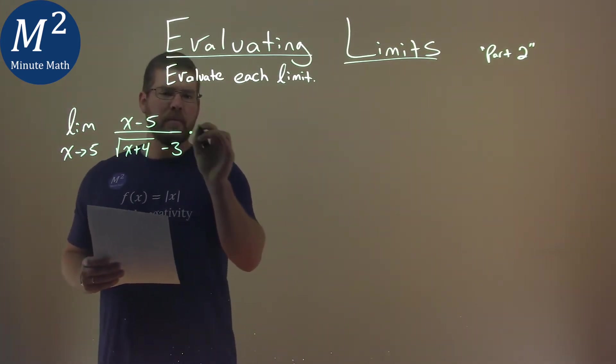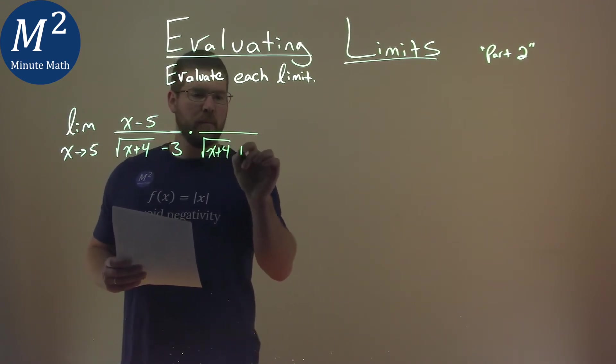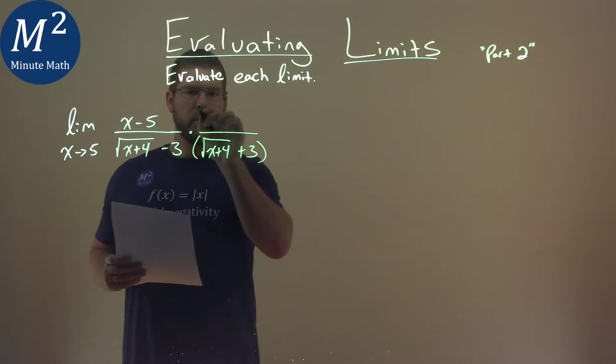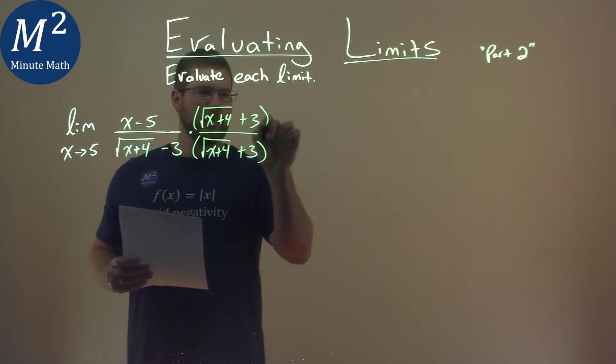And this is what I'm going to do. I'm going to multiply this by the conjugate: the square root of x plus 4 plus 3 over itself. And this is a common technique here with square roots.